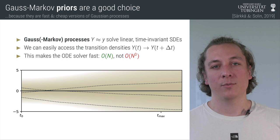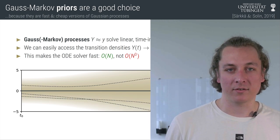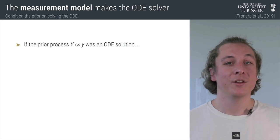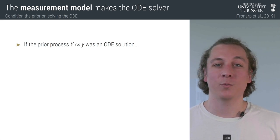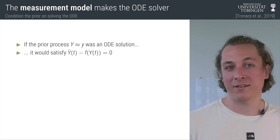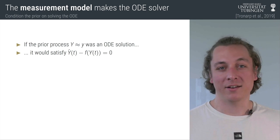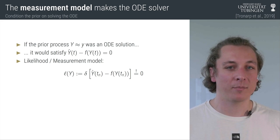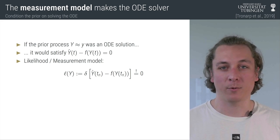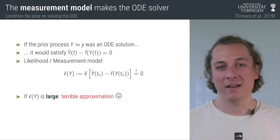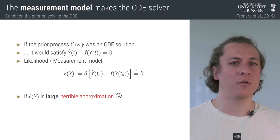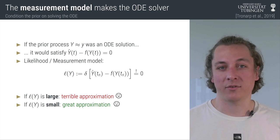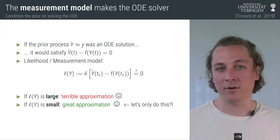The measurement model is what turns this algorithm into an ODE solver. But Nico, how does it work? I'm glad you're asking! Assume that the prior process was an ODE solution — then it would satisfy ẏ minus f(y) equals zero, right? So we'll just turn this into our likelihood. We'll measure the discrepancy between ẏ and f(y) at a bunch of time points. If this discrepancy is large, we have a terrible approximation of our ODE solution; but if it's small, we have a great approximation. So let's only keep it small.